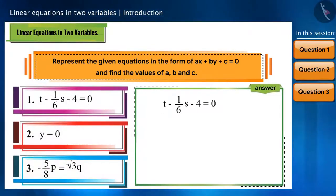The equation in the first question is already given in the general form. Here, a is equal to 1, b is equal to minus 1 by 6, and c is equal to minus 4. Friends, do not forget to pay attention to the signs here.